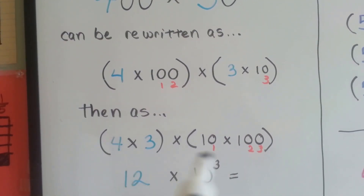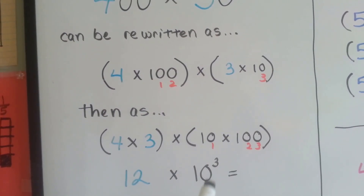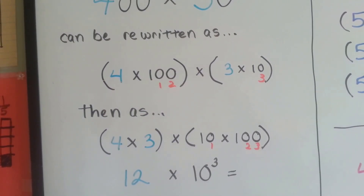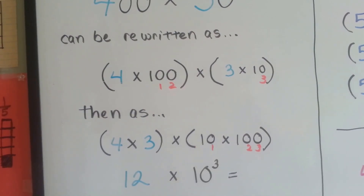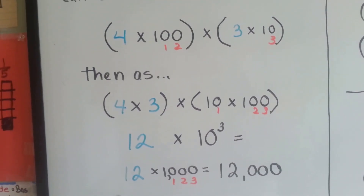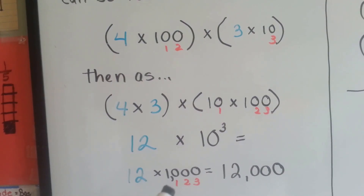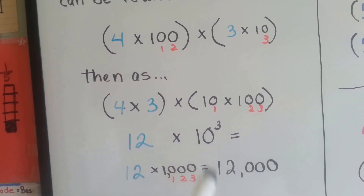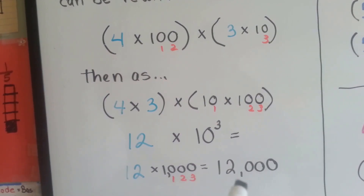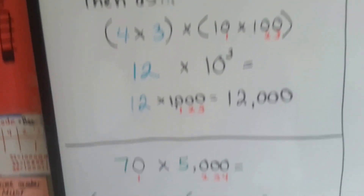When we get down to this point, we see we have 12 times 10 to the third power. Because 10 times 10 times 10 gives us the third power. 12 times 1,000 is 12,000. However many zeros you see is how many zeros will be in the answer, and that is what the power will be.